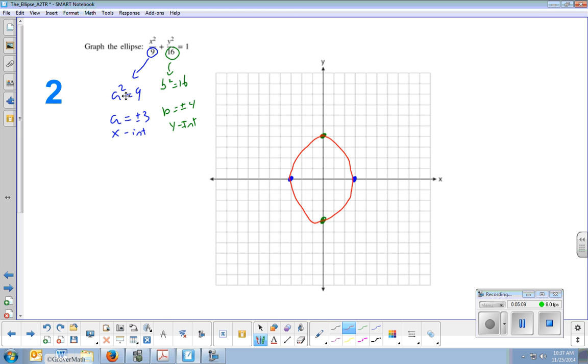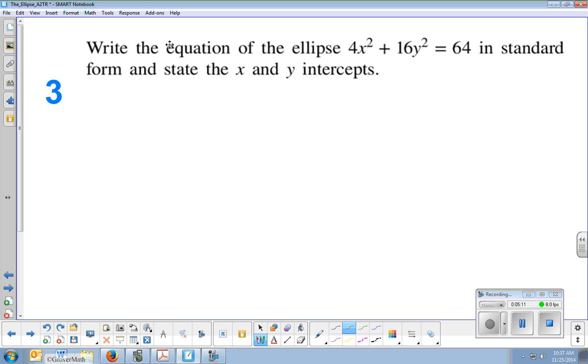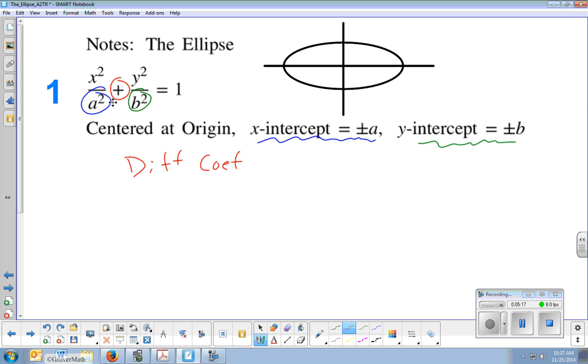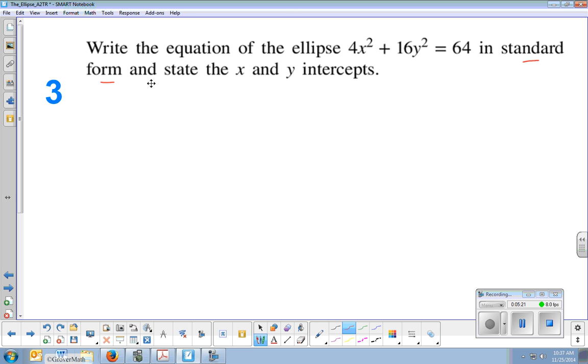All right. So one more example of what we see here is write the equation of the ellipse in standard form. Now, standard form is this. So we like it equal to 1 with these fractions here. And so how could I turn this equation? Let me just write the equation again. 4x squared plus 16y squared equals 64.